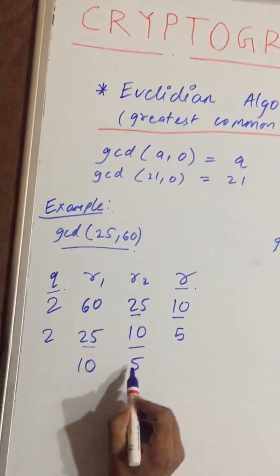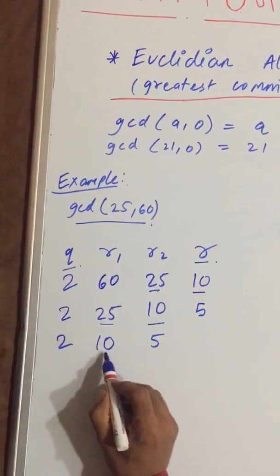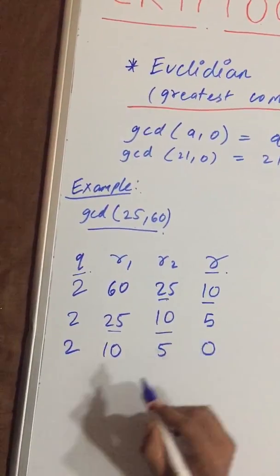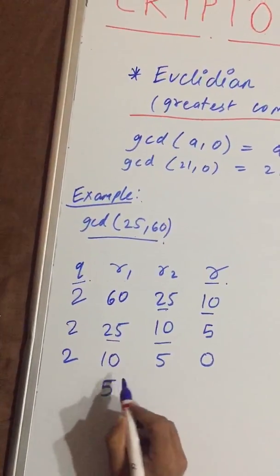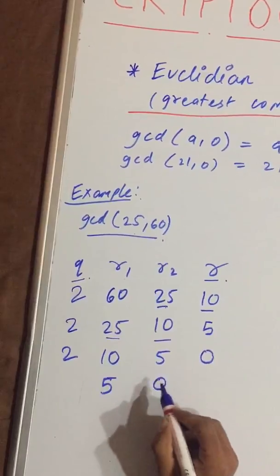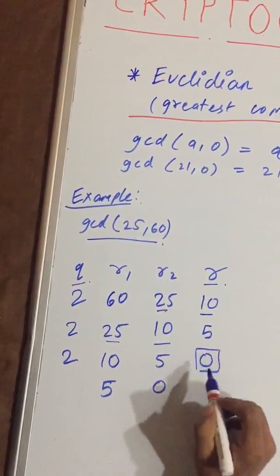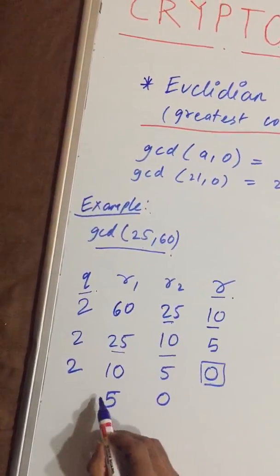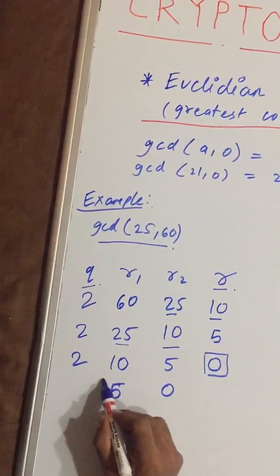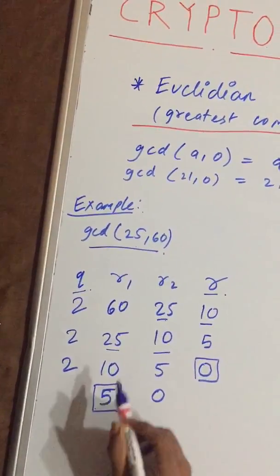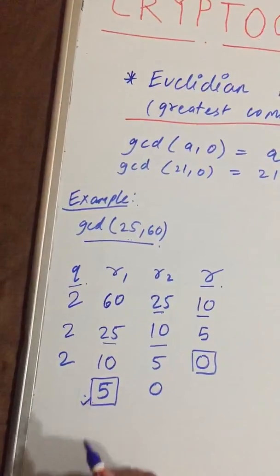Now multiply 5 times 2 to get 10, so the remainder will be 0. Shift both numbers to 5 and 0. Once you get remainder as 0, you stop. Shifting both numbers, we can see that GCD of 25 and 60 is 5.